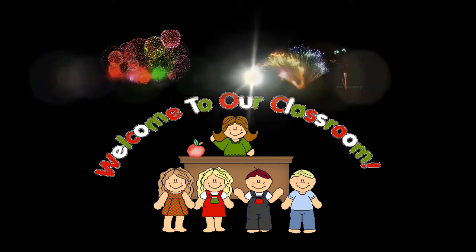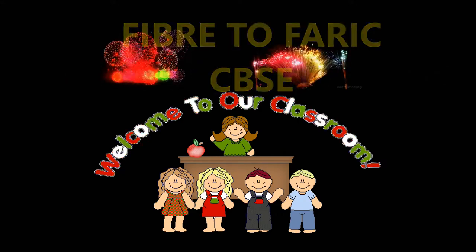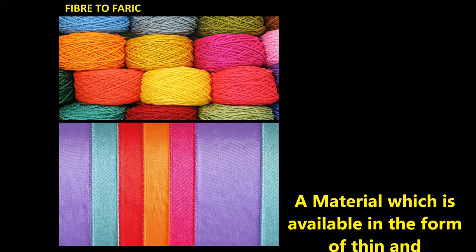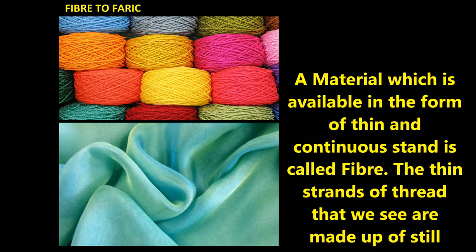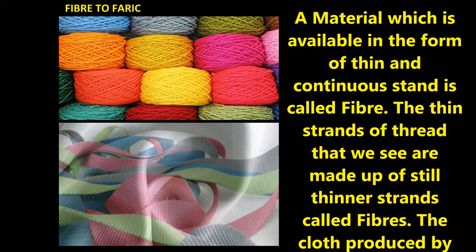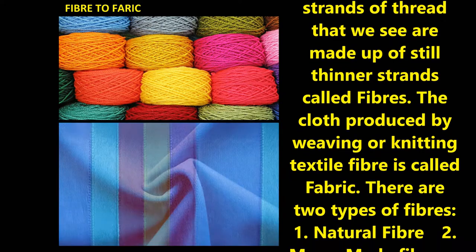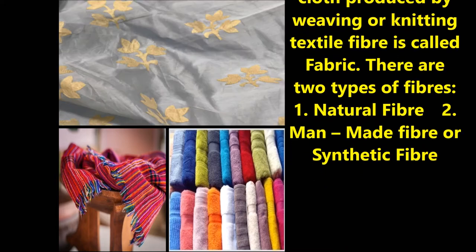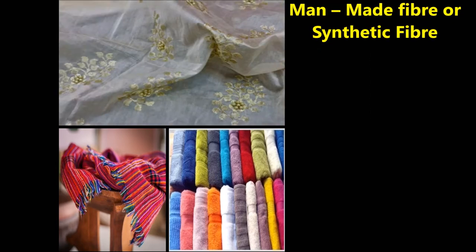Hi friends, my name is Nandita, I am from Andhra Pradesh. Good morning dear students. In this section we will discuss about fibers to fabric. A material which is available in the form of thin and continuous strands is called fiber. These thin strands of thread are made up of still thinner strands called fibers. The cloth produced by weaving or knitting textile fiber is called fabric. There are two types of fiber: natural fibers and man-made or synthetic fiber.